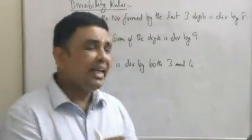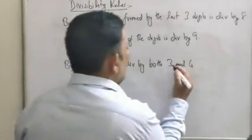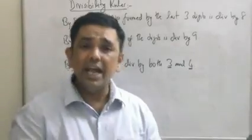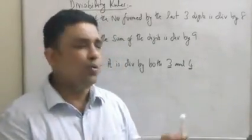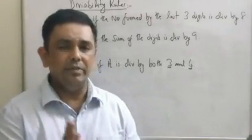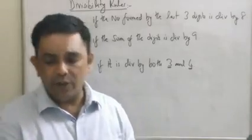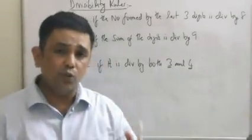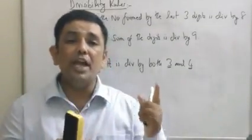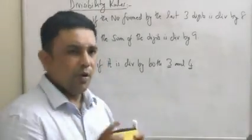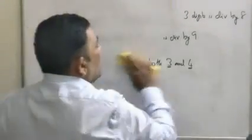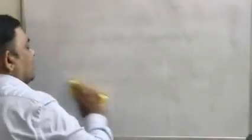In all these cases — except when using the co-prime component approach — you are also able to find out the remainder if the number is not completely divisible. So the divisibility rule answers two questions: one, is the number going to be divisible? And two, if it is not divisible, what will be the remainder?